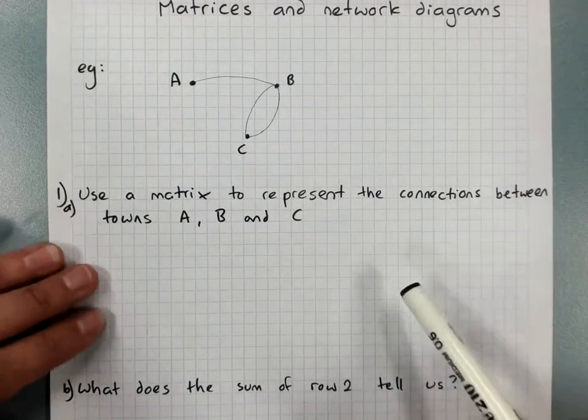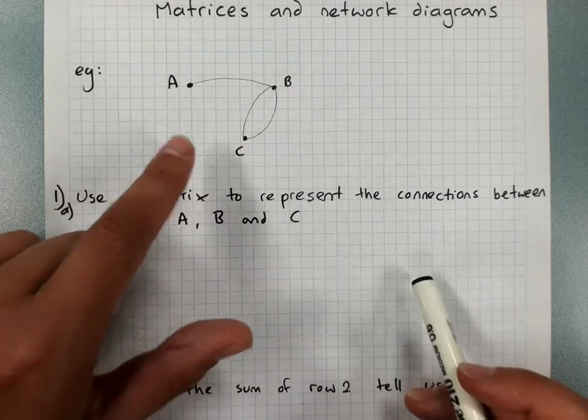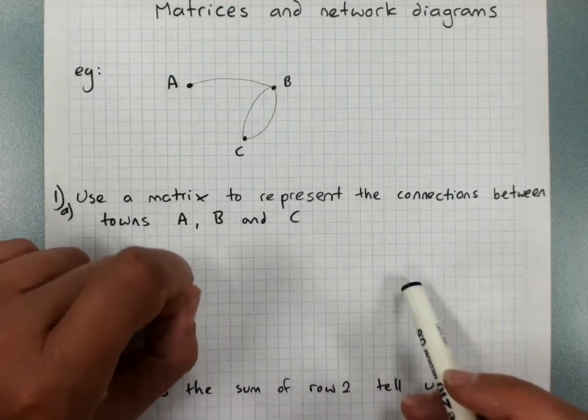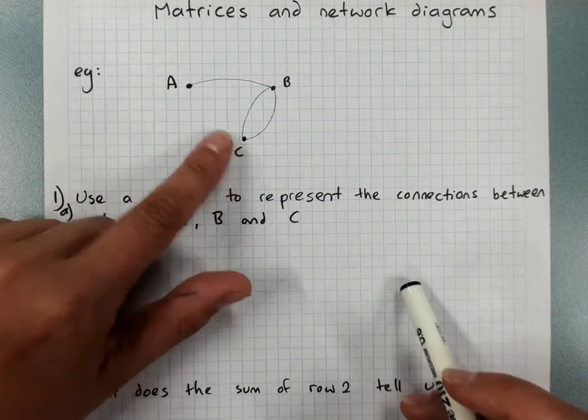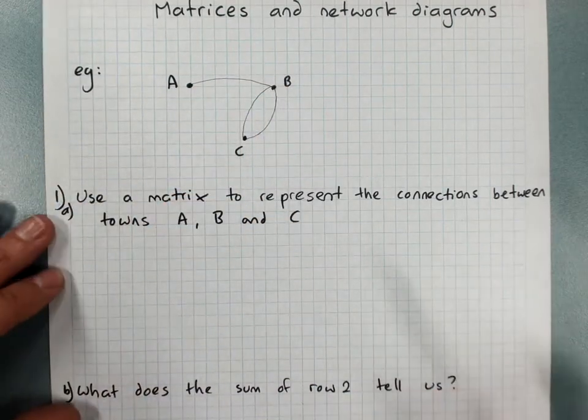Now each element shows the number of direct routes between two towns. So there's one way of getting from A to B. There's no ways of getting from A to C because there's no direct connection. Sure we could go around, but we're looking at direct connections only.